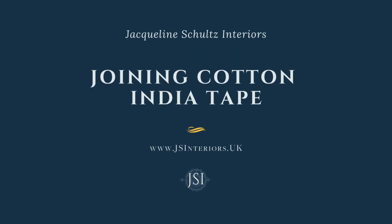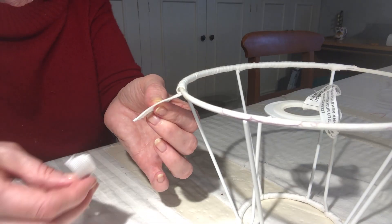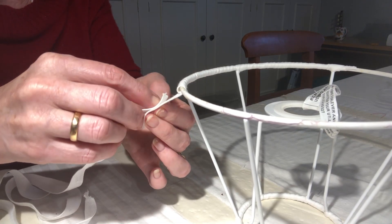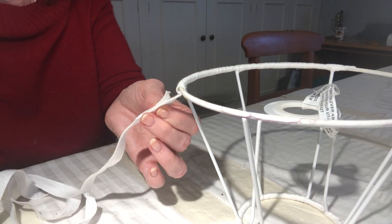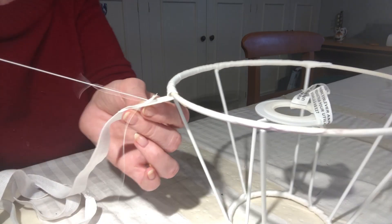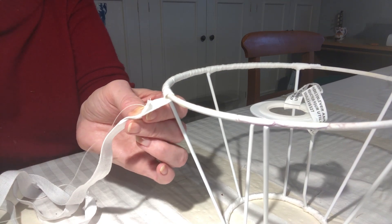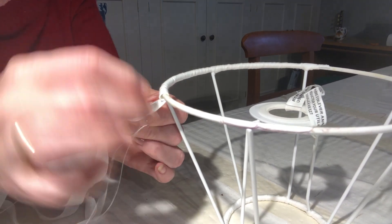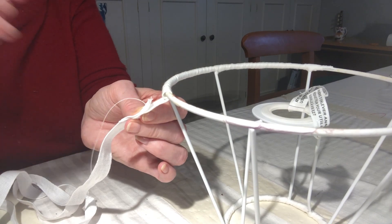When wrapping frames, you will need to join lengths of tape and you'll want to avoid this being messy or compromising tension. To attach an additional piece of tape, I use a flat blanket stitch. Line up the two ends of cotton India tape with the adjoining tape on top.